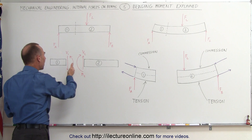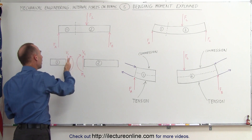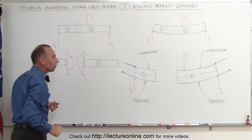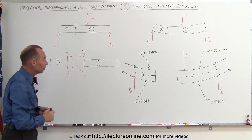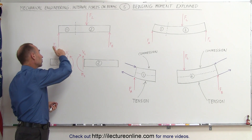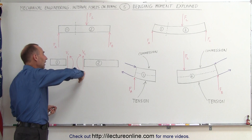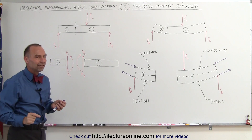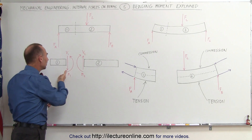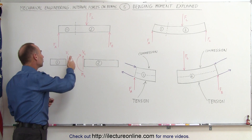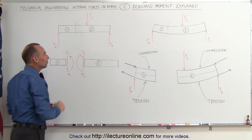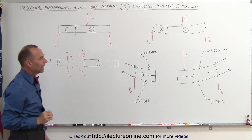How can we say that this is a positive moment on section one and that this is a positive moment on section two in those directions? Remember that typically a counterclockwise moment is considered positive and a clockwise moment is considered negative, but the convention here is that this is considered positive for moment one and this is also considered positive for moment two. Why is that?